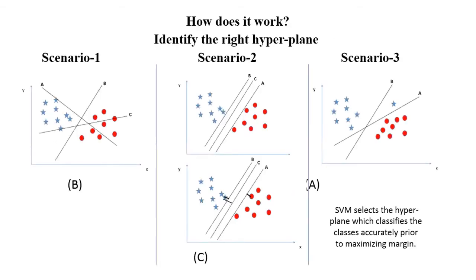How does it work? Identify the right hyperplane. For scenario one, there are three hyperplanes: A, B, C. Which hyperplane will be selected? Hyperplane B will be selected because it classifies the two classes perfectly. For scenario two, which hyperplane will SVM select? It selects C because we choose one that achieves the maximum distance between nearest data points.